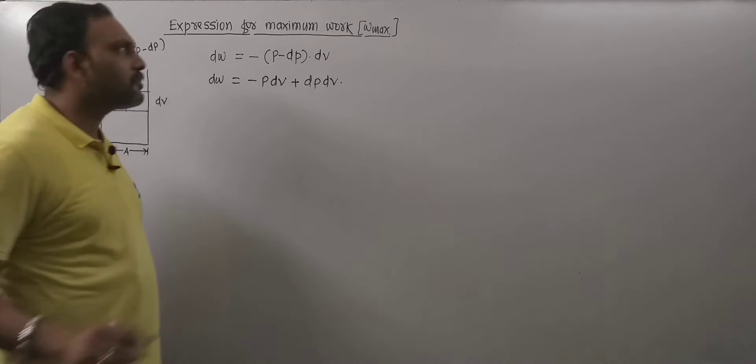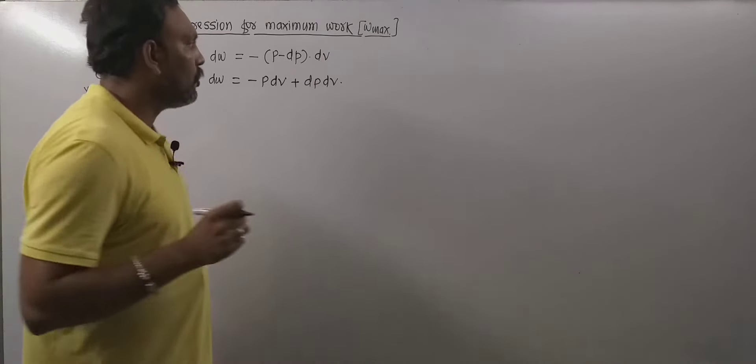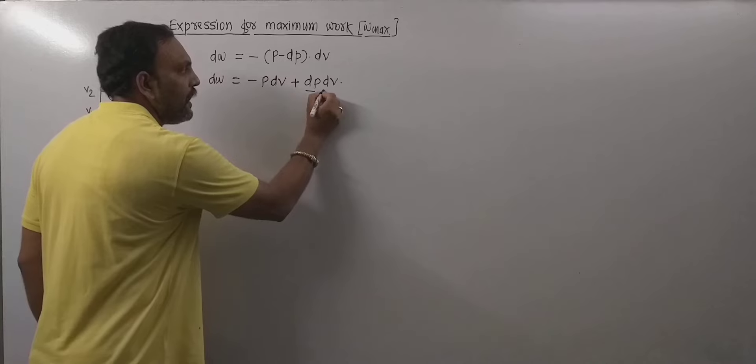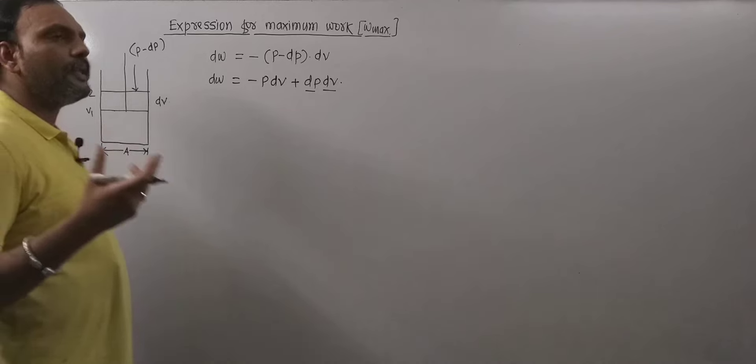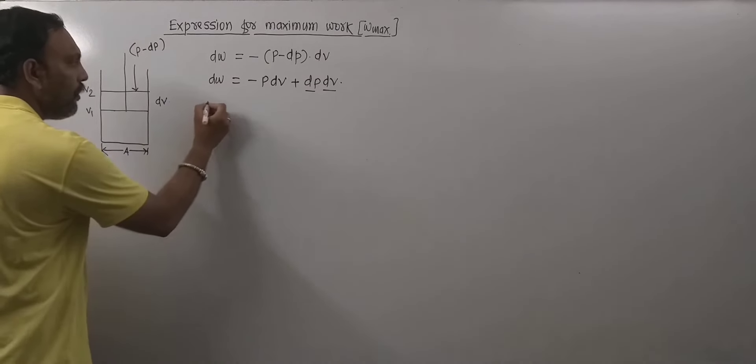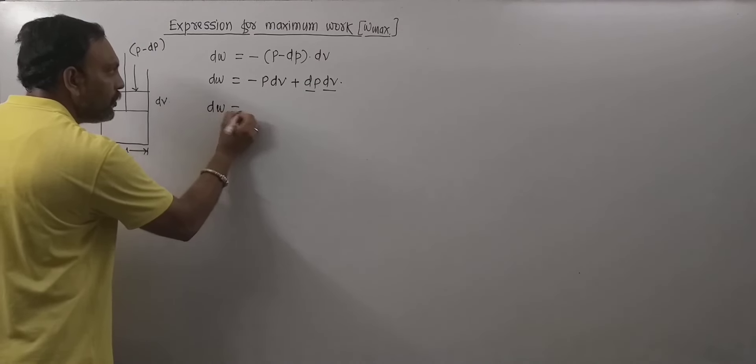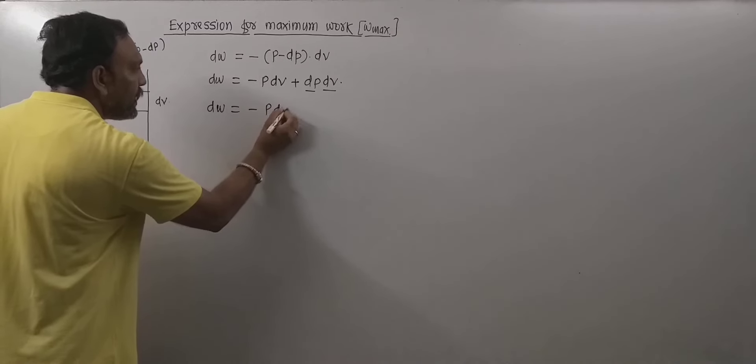Now our process is reversible, so the product dP and dV can be neglected practically as these are very very small. Now we have dW equals to minus p dV.